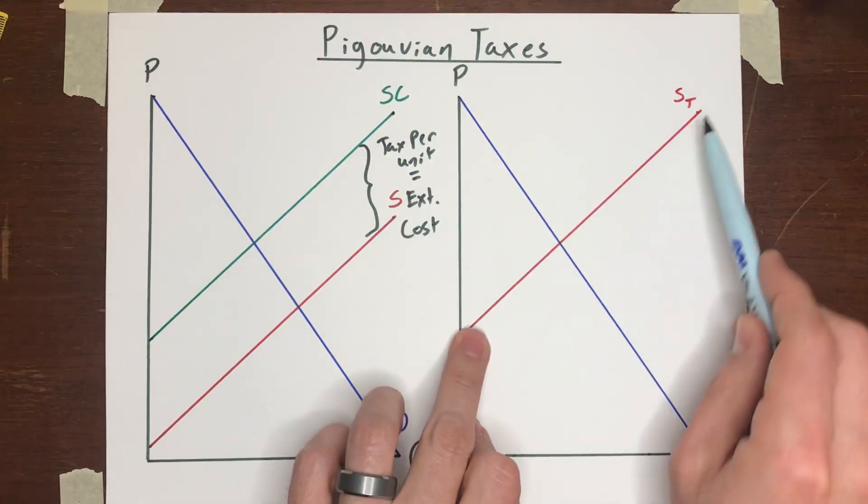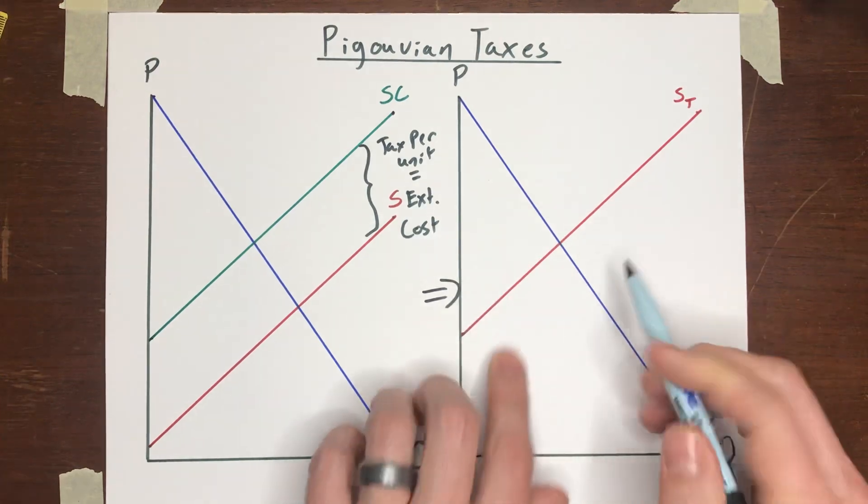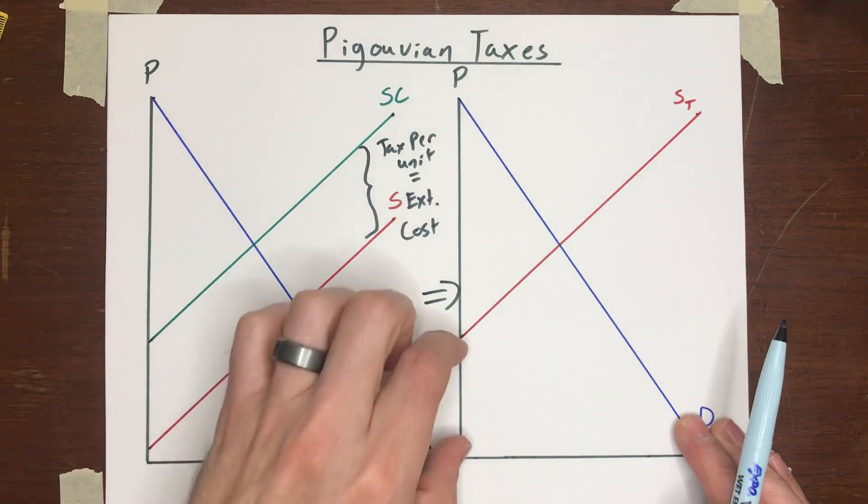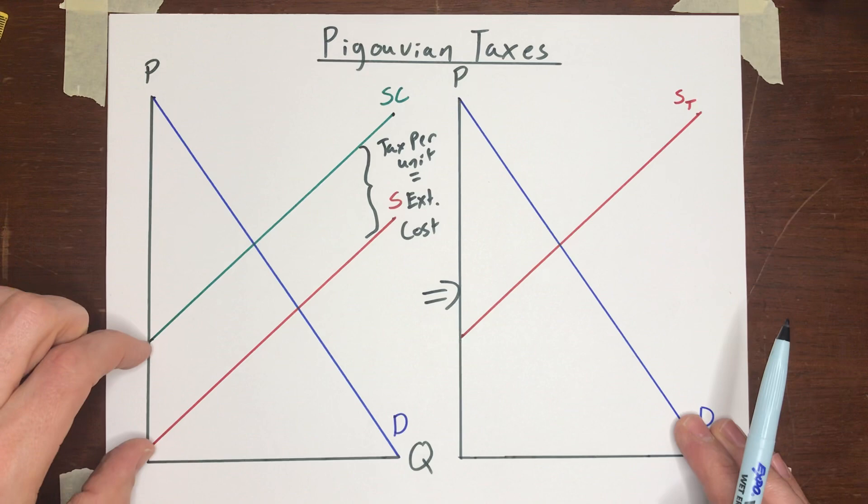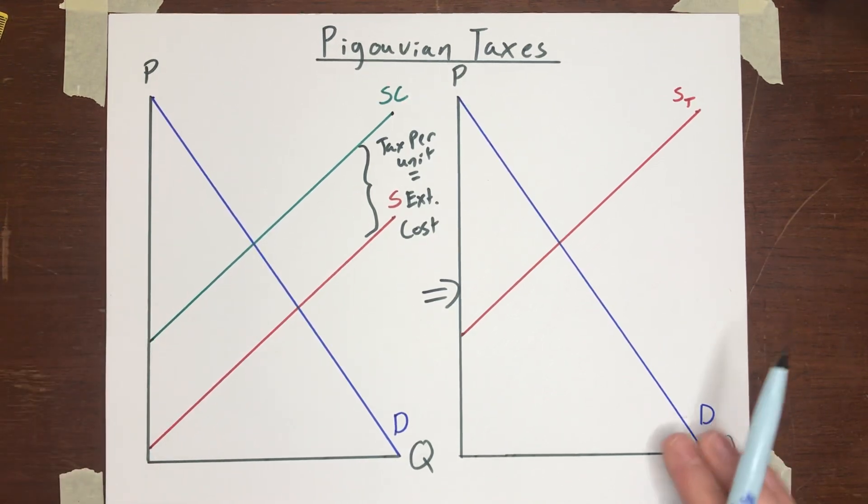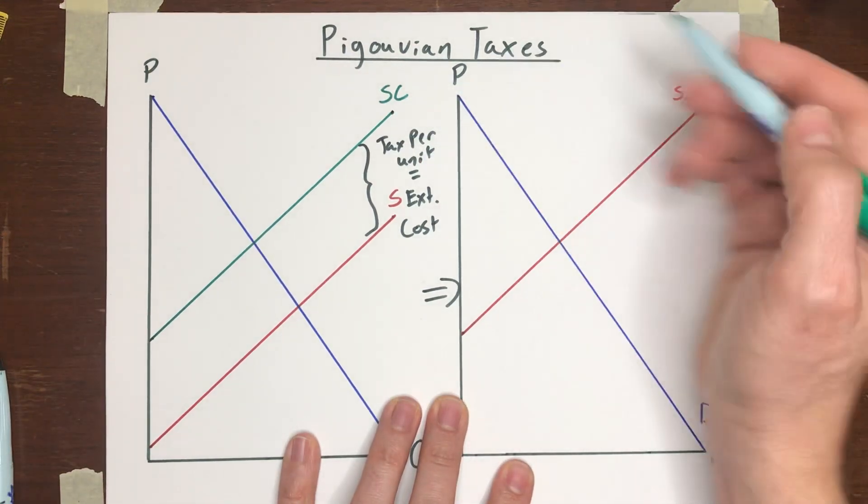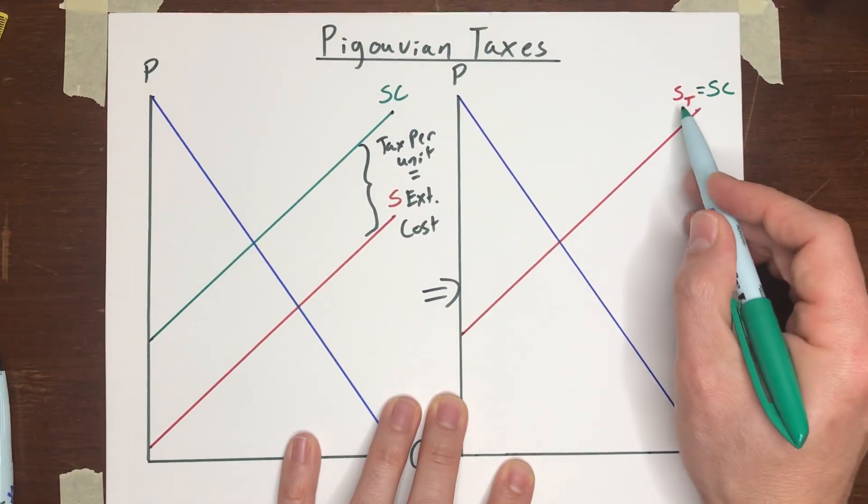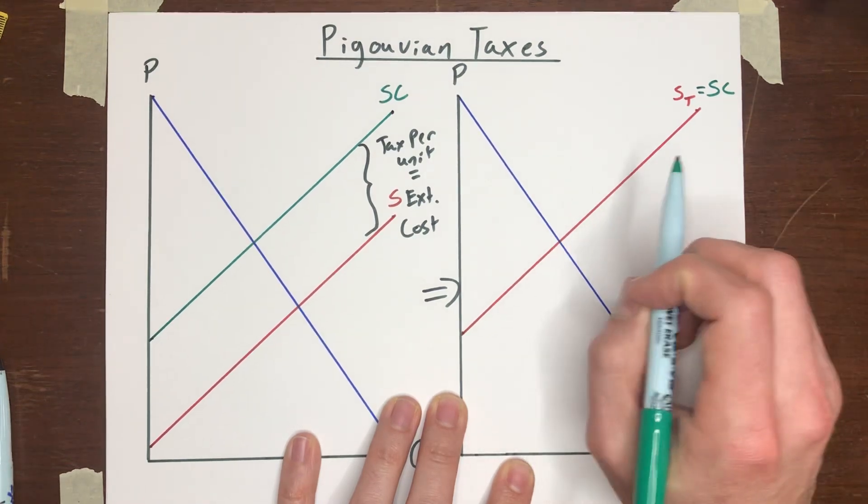And this is what has happened on this side of the market. If you impose this tax, you will get to this situation over here where this supply curve, the distance between this supply curve and the old one is exactly the same as the distance between the supply curve and the social cost curve. So in this case, the supply curve is exactly overlapping the social cost curve. And we could say they are the same curve. The supply curve with a tax is equal to the social cost curve.